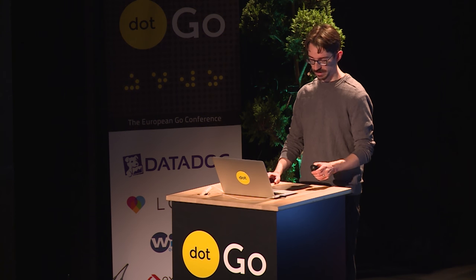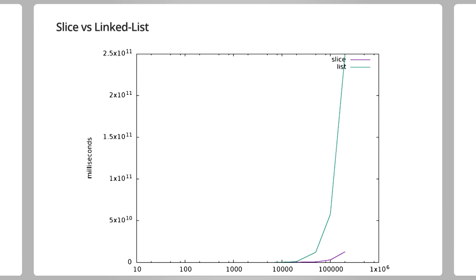Here's what happens if I make the x-axis linear. At 200,000 elements, the slice version took 12 seconds, and the linked list version took 4 minutes and 8 seconds. At 500,000 elements, the slice version took 1 minute 22 seconds, and I killed the linked list version because I was tired of waiting.